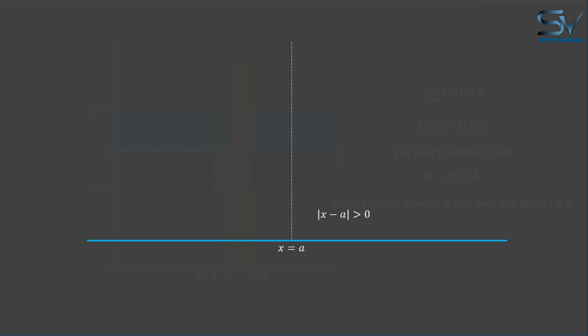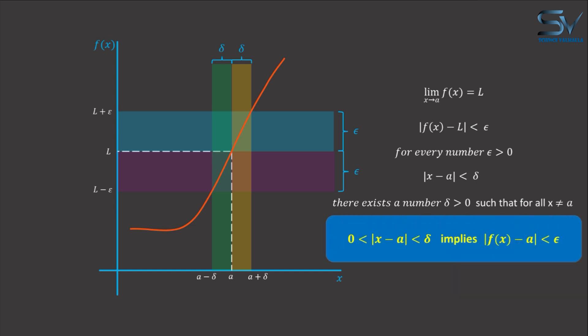It means the difference between x and a should not be zero. So, for every positive number epsilon, there exists a positive number delta depending on epsilon.